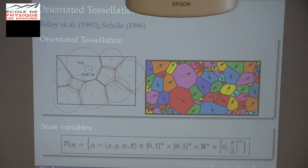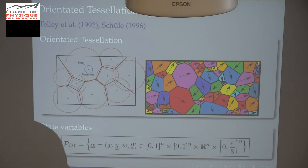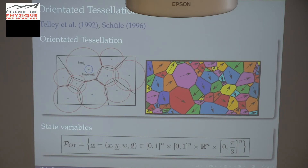In Voronoi tessellation, you have seeds with coordinates, weights, and you create cells by a simple rule. You also add the crystal orientation — in 2D, only one angle. So the set of parameters describing the tessellation is coordinates, weights, and angles. I'm going to update only the weights to keep things simple, because I really need a simple macroscopic model in the end to see if it works.